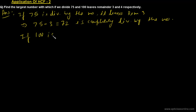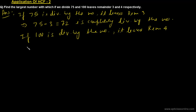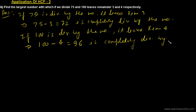For the second case, when 100 is divided by the number it leaves remainder 4. That means 100 minus 4, which is 96, is completely divisible by the number. So the question has simplified to finding a number which fully divides both 72 and 96.